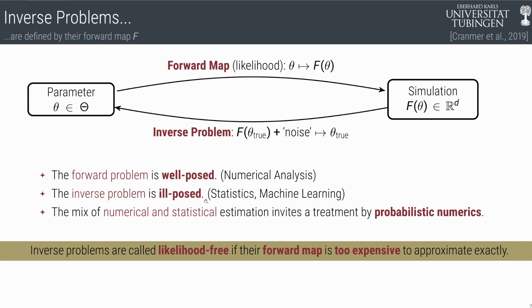However, if you go from the right to the left, if you solve the inverse problem, then we're talking about an ill posed problem. You don't even know what you're approximating because it could be multiple things. So here, you have to use statistics or machine learning. This mix of numerical and statistical estimation invites a treatment by probabilistic numerics.